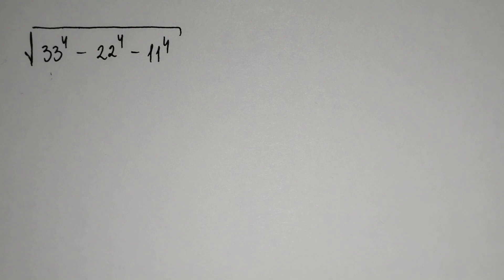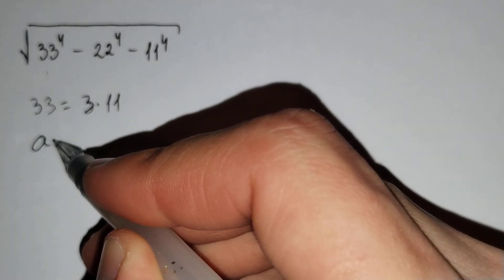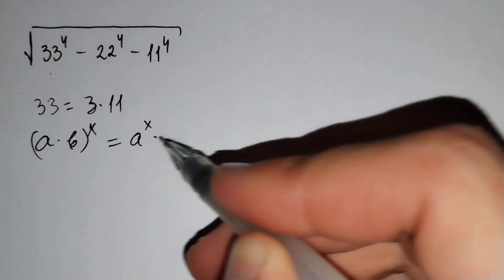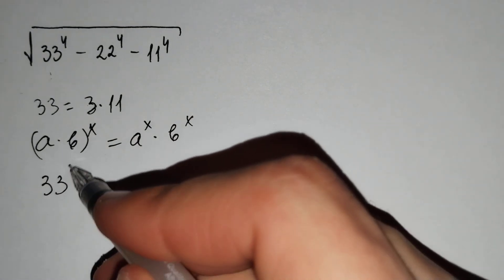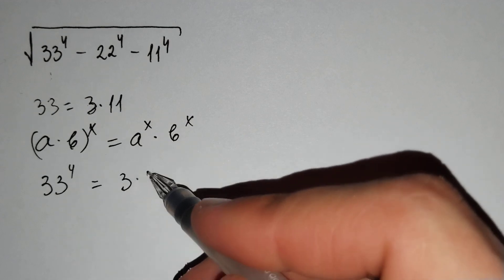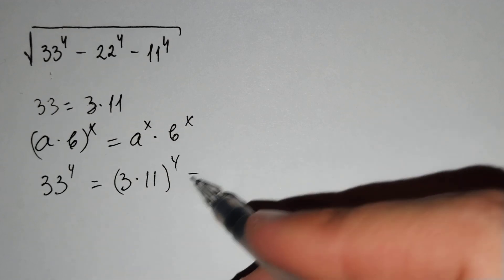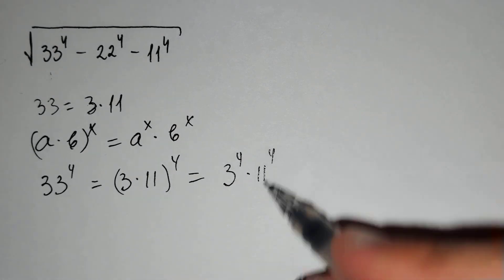Firstly, we know that 33 equals 3 times 11. And we know that (a times b) to the power x equals a to the power x times b to the power x. Using this formula, 33 to the power 4 equals (3 times 11) to the power 4, which equals 3 to the power 4 times 11 to the power 4.